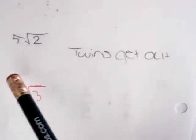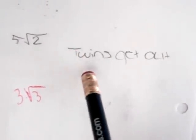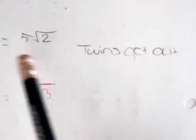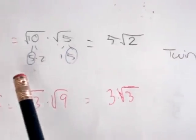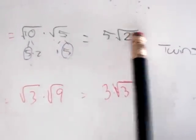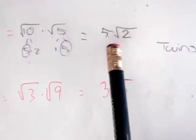So we have this rule about twins get out. Yes, twins get out. And what that means is 2 of the same number, they go outside of the square root. Right.